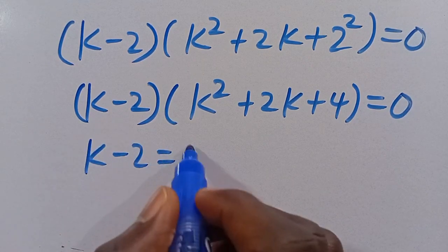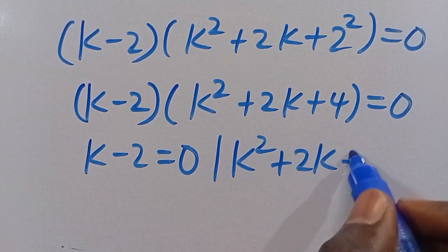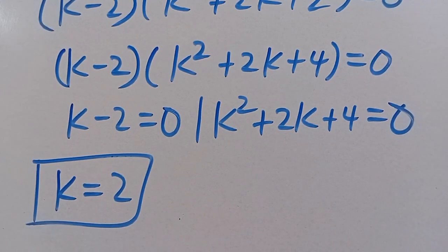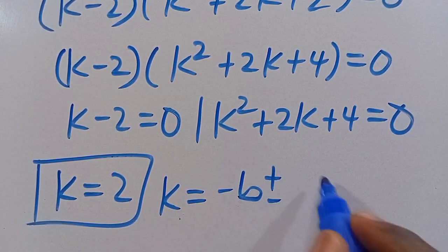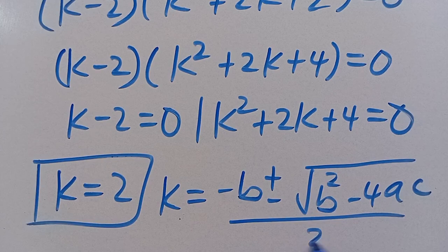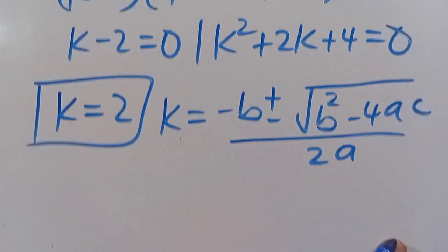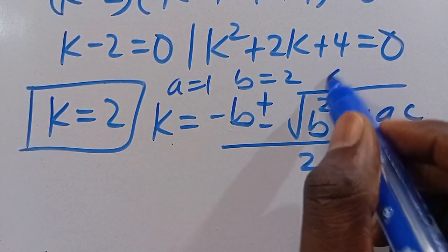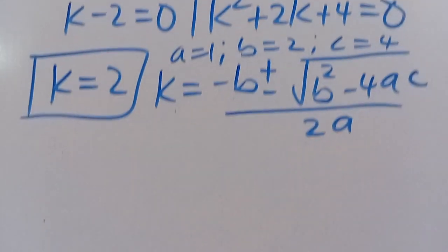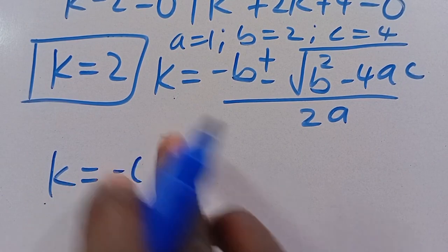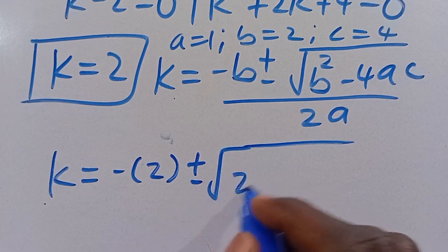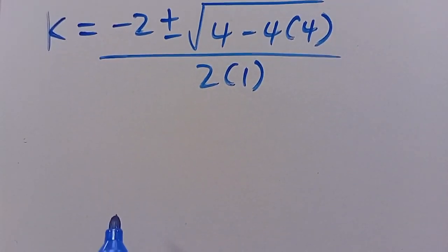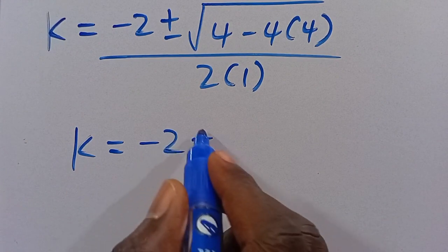From here we have k minus 2 in parentheses multiplied by k squared plus 2k plus 4 equals 0. So from here it is either k minus 2 equals 0, or k squared plus 2k plus 4 equals 0. From here we have k equals 2 as another real solution. Applying the quadratic formula with a equals 1, b equals 2, and c equals 4.